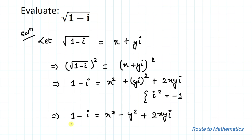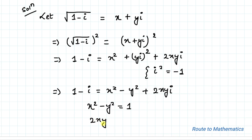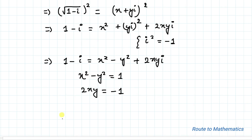Two complex numbers are equal if and only if their real parts are equal and their imaginary parts are equal. Equating real parts: x² - y² = 1, and equating imaginary parts: 2xy = -1.